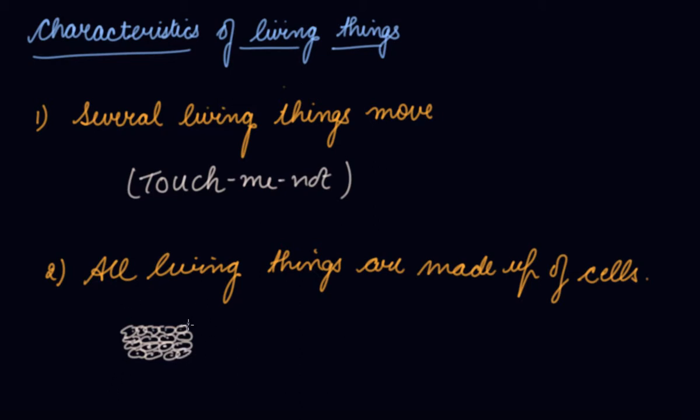All living beings are made up of cells. Some living things are unicellular — made of only one cell — like amoeba and paramecium. Whereas human beings are made up of a large number of cells. The bigger the animal, the greater the number of cells in them.